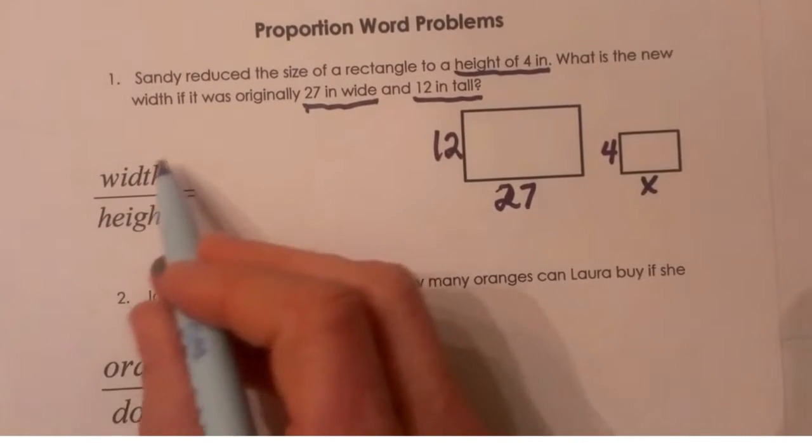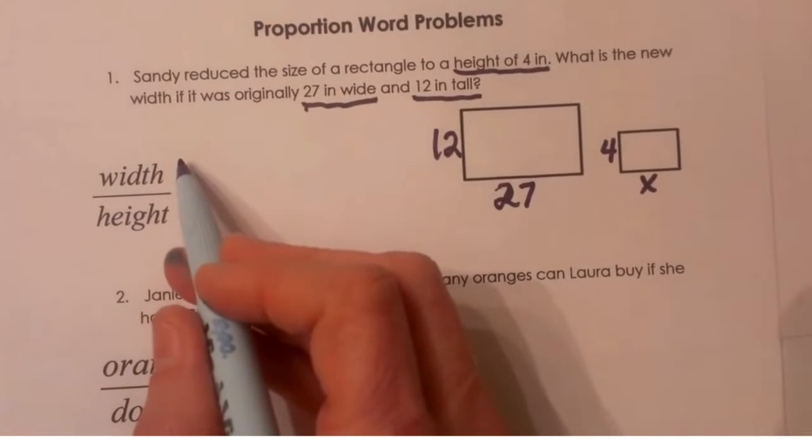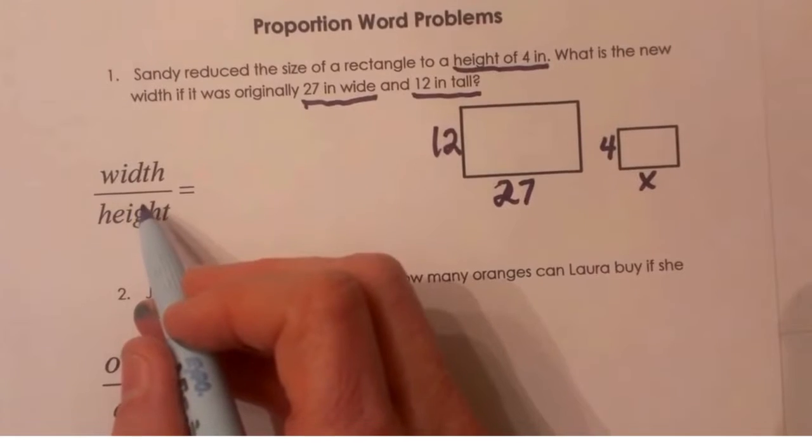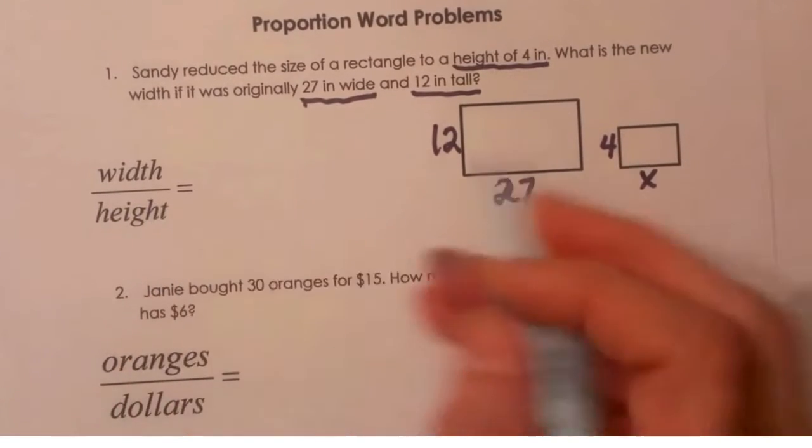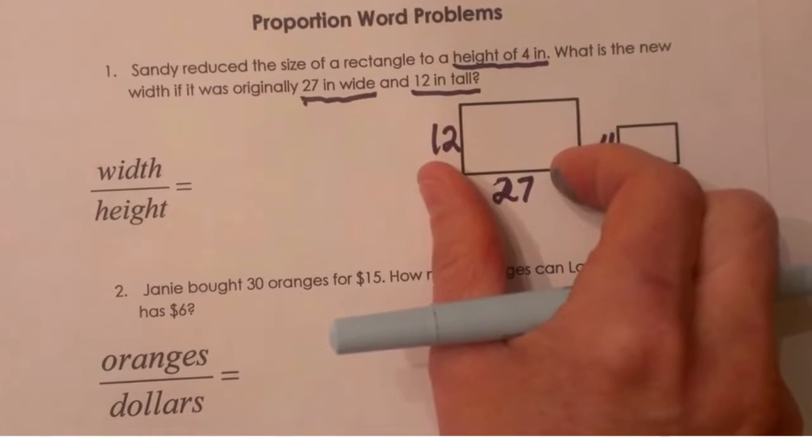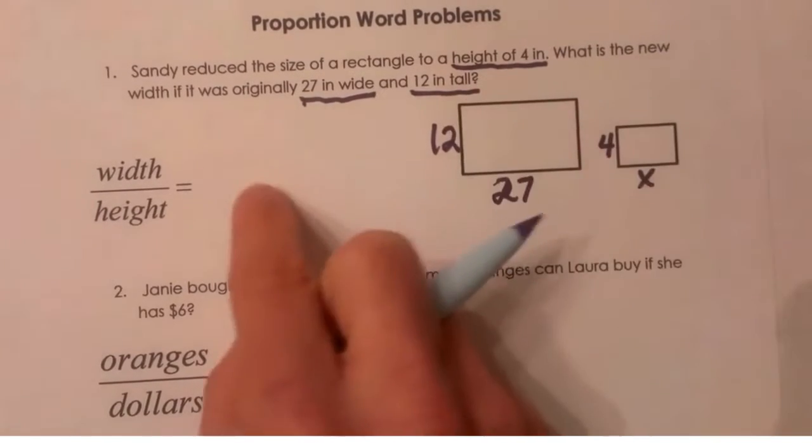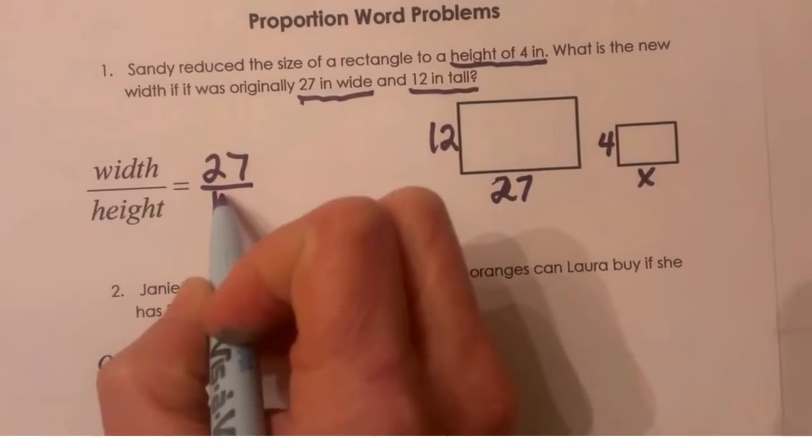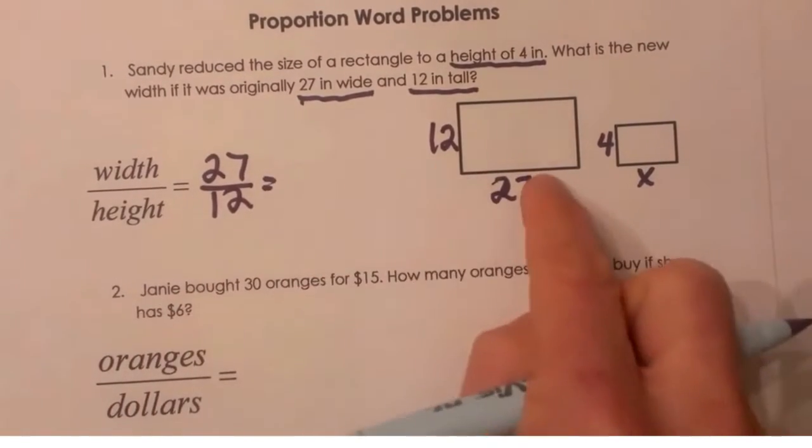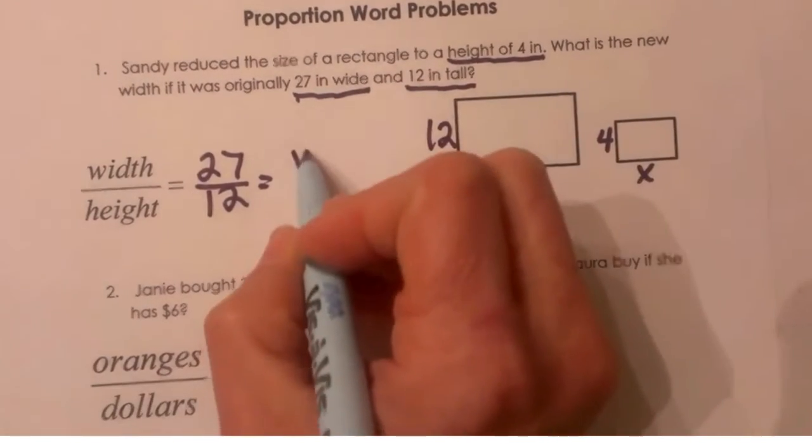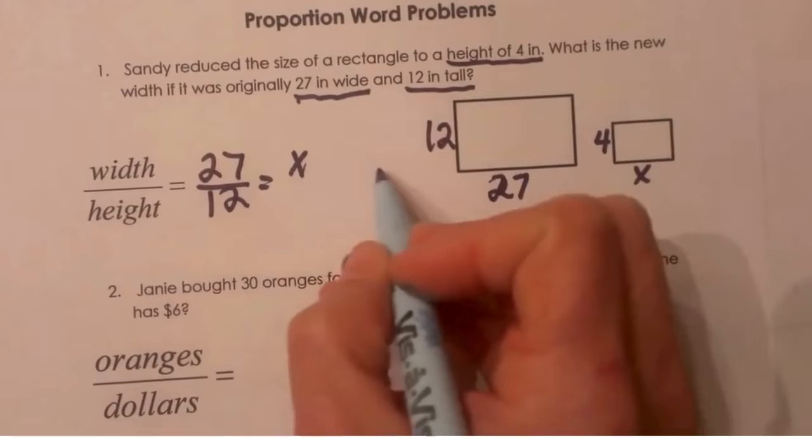Now I'm going to set up a proportion. I'm going to put my width on top and my height on the bottom. You could reverse these but you just need to be consistent. So let's set up the width which is 27 over the height which is 12. That's my first proportion for my first rectangle. And then I've got to set up the width again on top and my height on the bottom.